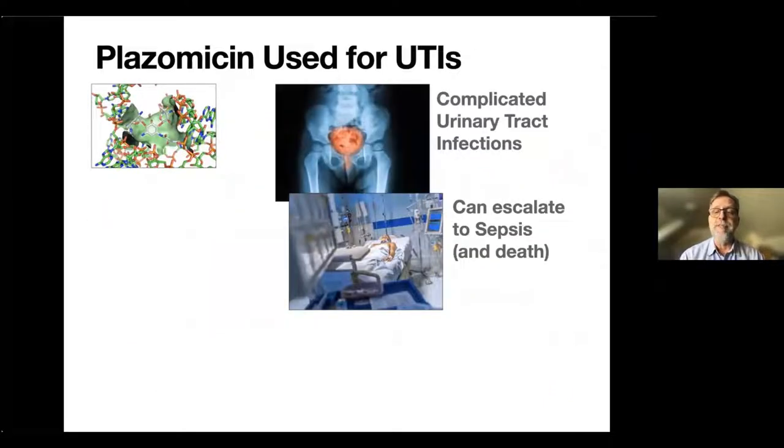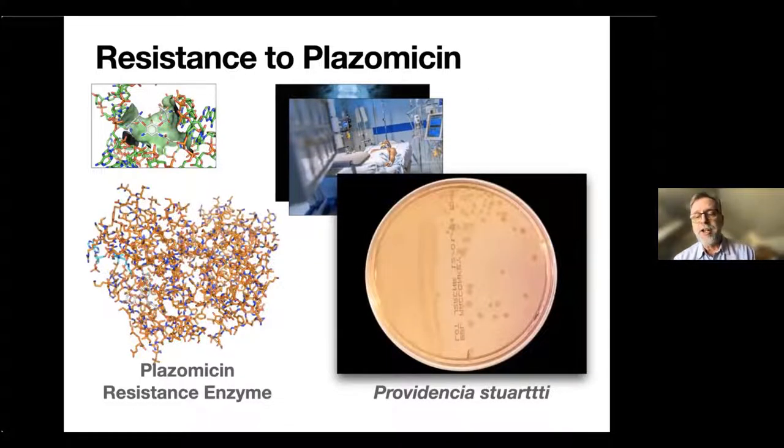This is a perfect thing, of course, if you have, for instance, a complicated urinary tract infection, and plazomicin is used for that. Plus, urinary tract infections can be pretty nasty and can actually lead to sepsis, and sepsis, if not treated properly, can lead to death. So fortunately, plazomicin is very good in treating that, except if you are very unlucky, and one of the bacteria in this urinary tract infection is Providentia stuartii. This bacteria is already resistant to this latest antibiotic, plazomicin, because it has an enzyme that you can see here on the left.